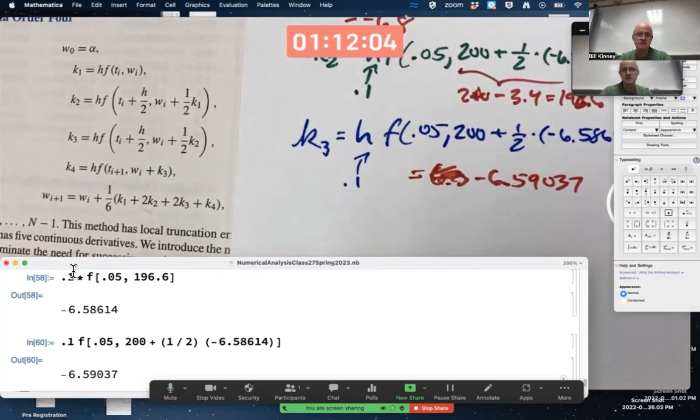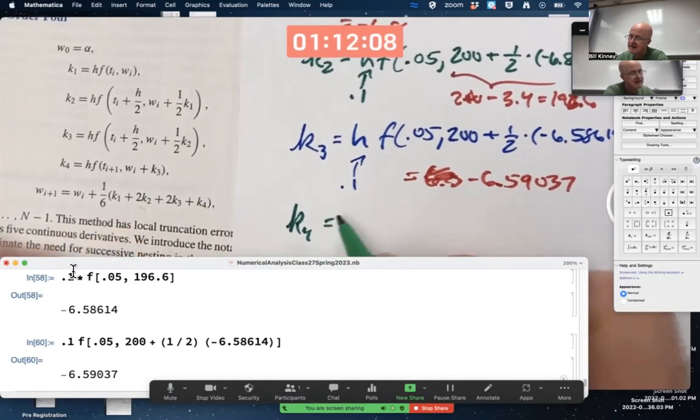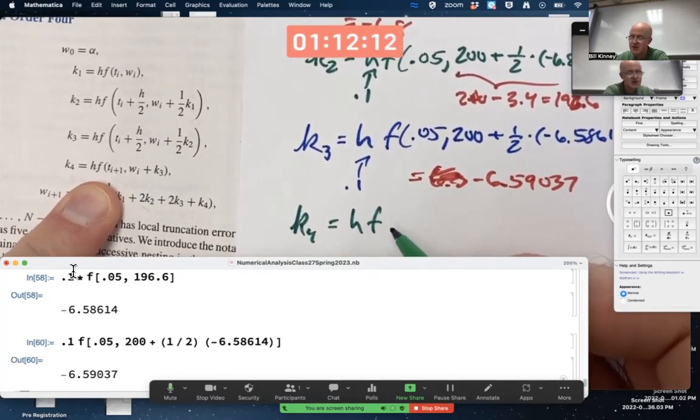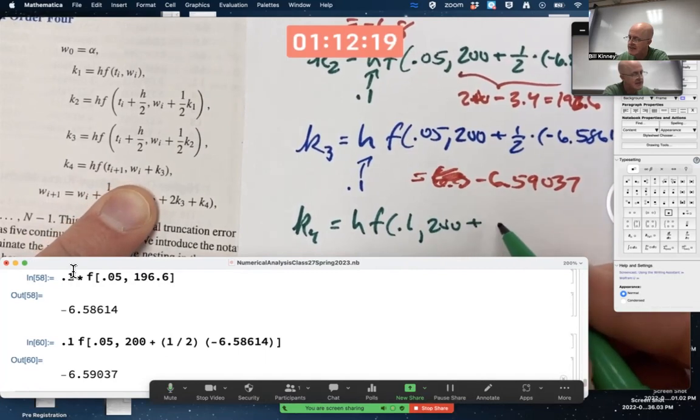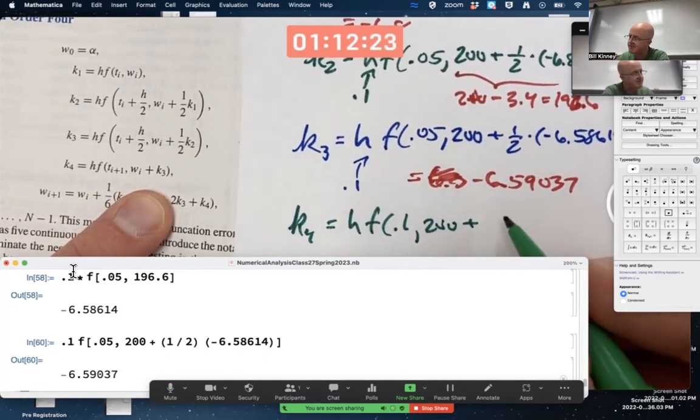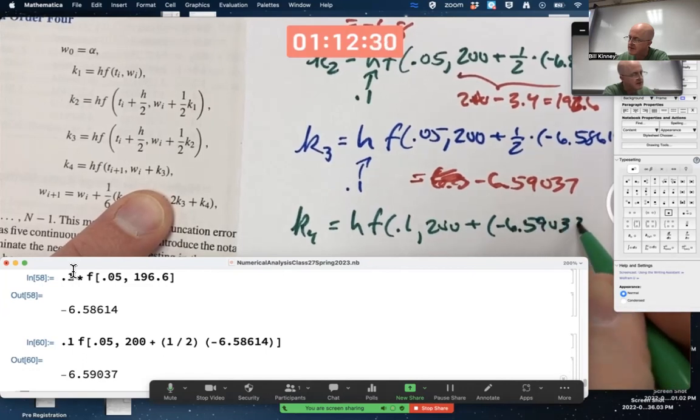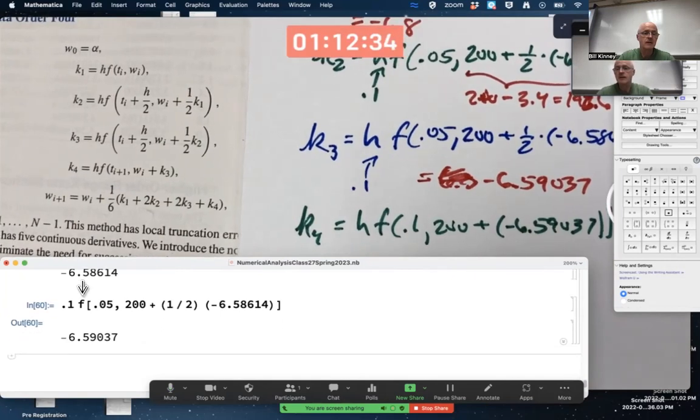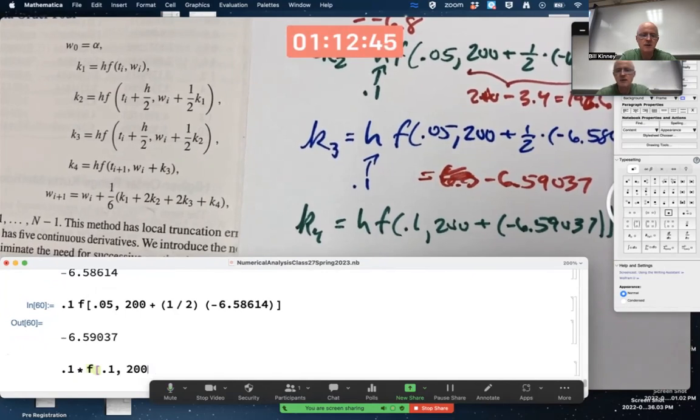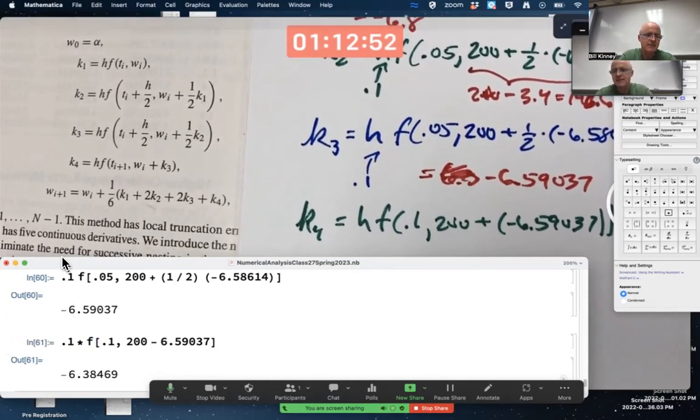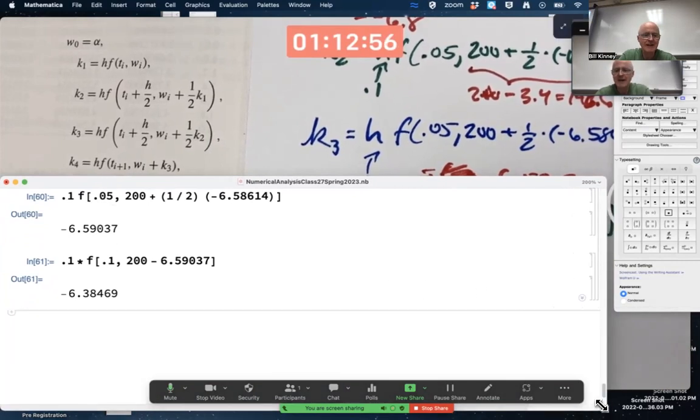Finally, K4 is H times F of, it'll be 0.1 now, not 0.05 comma, W_i 200 plus K3. And it's not 1/2 K3, but K3 itself. K3 is the negative 6.59037. This should still be something, a negative 6.5 something probably. 0.1 times F of (0.1, 200 minus 6.59037). Same kind of ballpark.